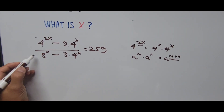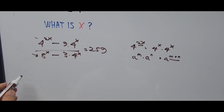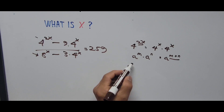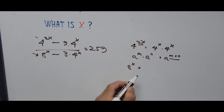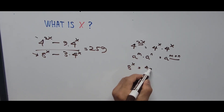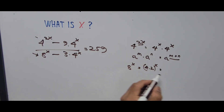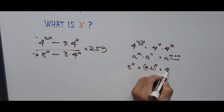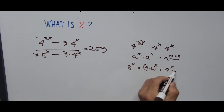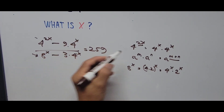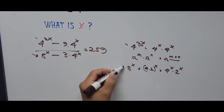Next, we focus on the term 8 raised to x. Since 8 equals 4 times 2, we convert 8 raised to x as 4 raised to x times 2 raised to x. Now we substitute both of these into the equation.